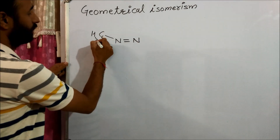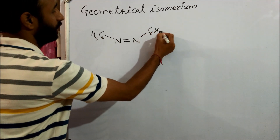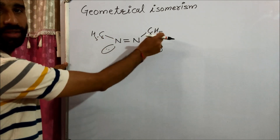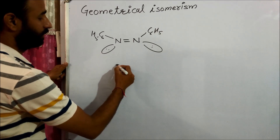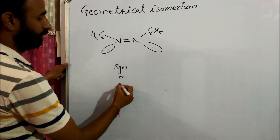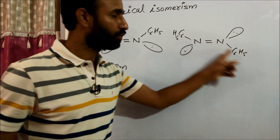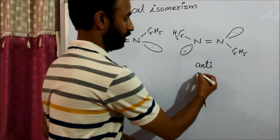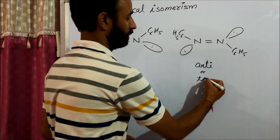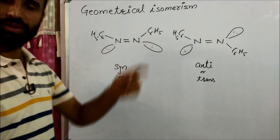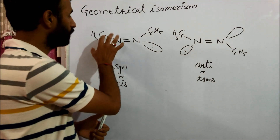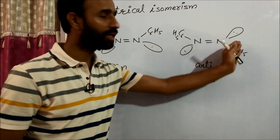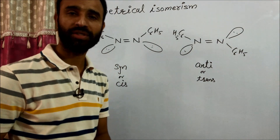The third category is N=N (azo compounds). For azobenzene (C₆H₅-N=N-C₆H₅), if both phenyl groups are on the same side, it is called syn- or cis-azobenzene. If they are on opposite sides of the double bond, it is called anti- or trans-azobenzene. The N=N group is known as the azo group.